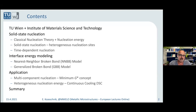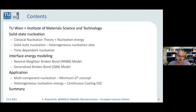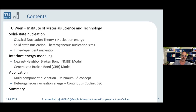I will talk about classical nucleation theory and then discuss all the extensions we have developed over the last years. I will show two examples at the end where I think the aggregate of all these ingredients is needed: one is solving the question of what the chemical composition of a nucleus could be in the optimum case, and the other will be a continuous cooling DSC experiment where I just couldn't get the simulations and experiments in line unless we extended the theory.